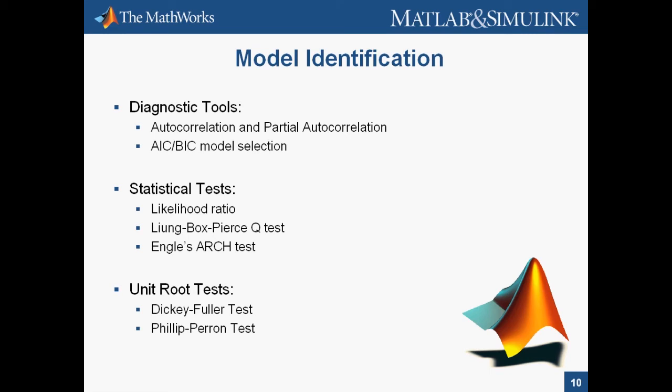Econometrics Toolbox also has tools for comparing alternative models and helping us choose an appropriate model for our problem. A list of these tools includes autocorrelation, cross-correlation, and partial autocorrelation functions, Akaike and Bayesian information criteria, likelihood ratio tests, Ljung-Box-Pierce Q test, Engle's ARCH test, and Dickey-Fuller and Phillips-Perron unit root tests.